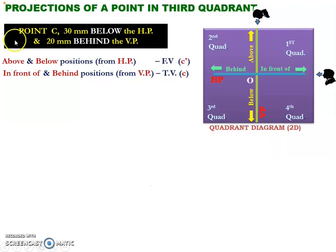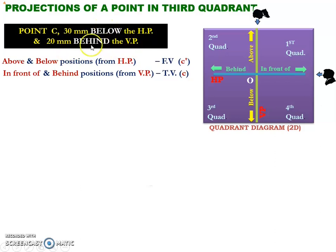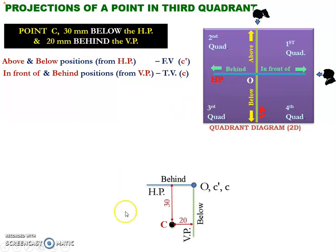Now let us solve the same problem using the shortcut method. The point C is 30 mm below the horizontal plane and 20 mm behind the vertical plane. From these two keywords — below and behind — we can understand that the point is located in the third quadrant. Here you can see the diagrammatic representation of this point, capital C, which is located in the third quadrant, 30 mm below the horizontal plane and 20 mm behind the vertical plane.